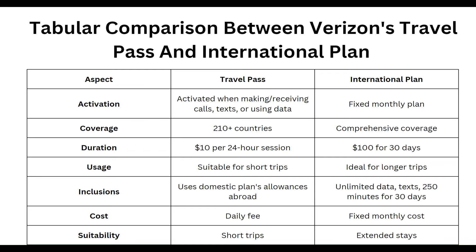The International Plan is cheaper for longer trips at $100 for 30 days. Travel Pass is suitable for short trips, while the International Plan is ideal for long trips. Inclusions: Travel Pass uses your domestic plan allowance abroad, while the International Plan includes unlimited data, texts, and 250 minutes for 30 days. Cost structure: Travel Pass has a daily fee, the International Plan has a fixed monthly cost. Suitability: Travel Pass for short trips, International Plan for extended stays.